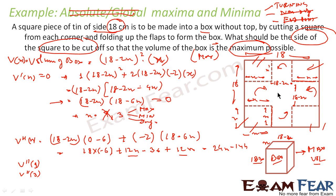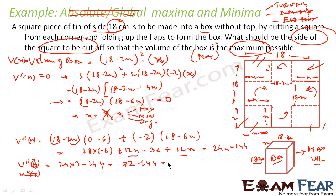So I will find only V''(3). Computing V''(x) from V'(x) = (18 minus 2x)(18 minus 6x), we get V''(x) = 24x minus 144. Therefore V''(3) equals 24 times 3 minus 144, which is 72 minus 144, equals minus 72. Since it is less than 0, we can say that at x equals 3, this function has a maxima value.